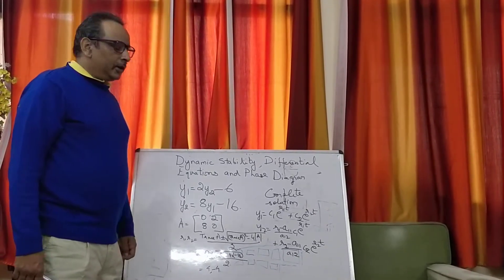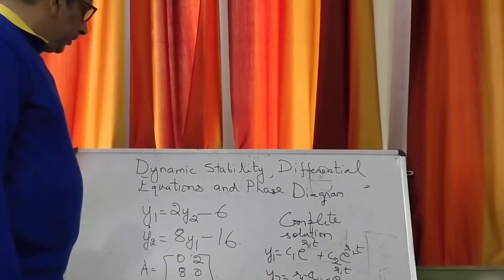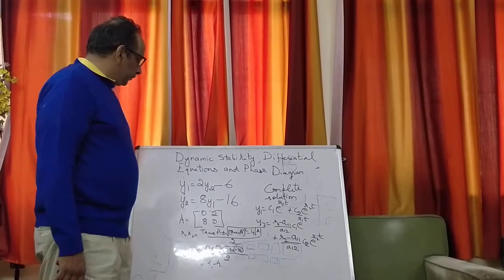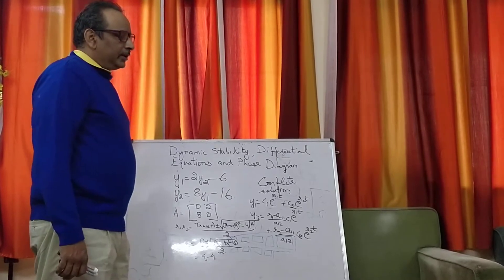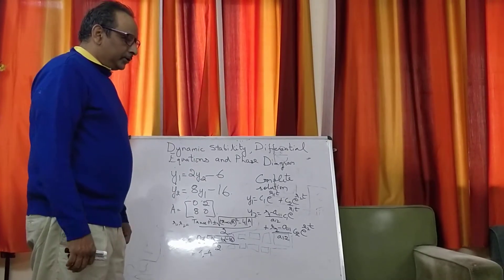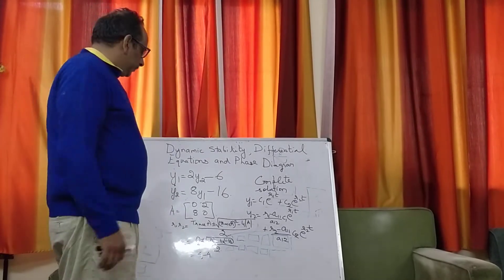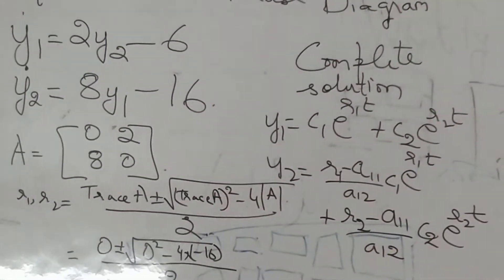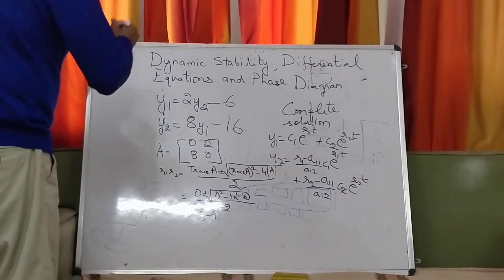If all the roots are positive, then you would see a solution wherein the solution will diverge from the long-run equilibrium. If both the roots turn out to be negative, then all solutions turn out to converge towards the equilibrium. And the third possibility: if one of the roots is positive and the other is negative, then you would have a solution called the saddle path.